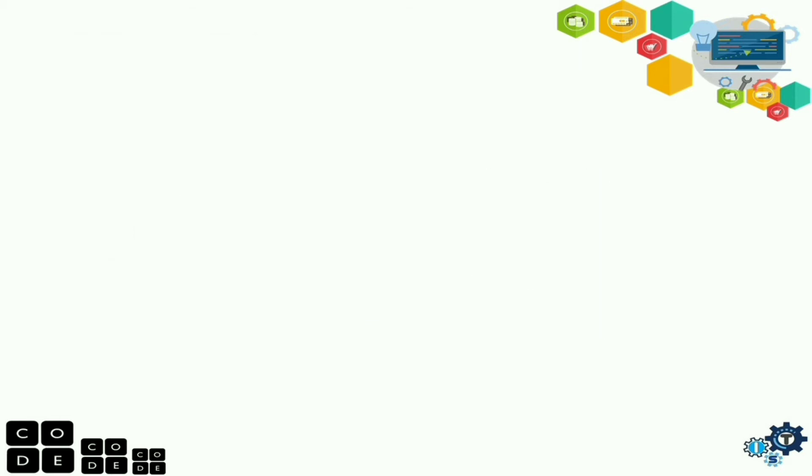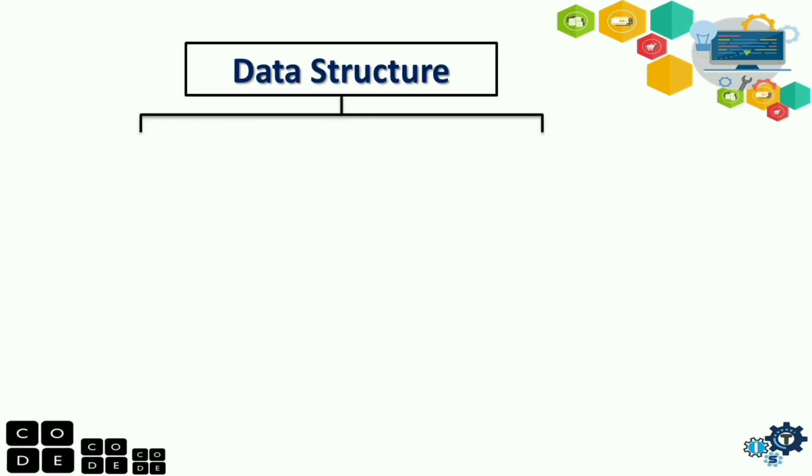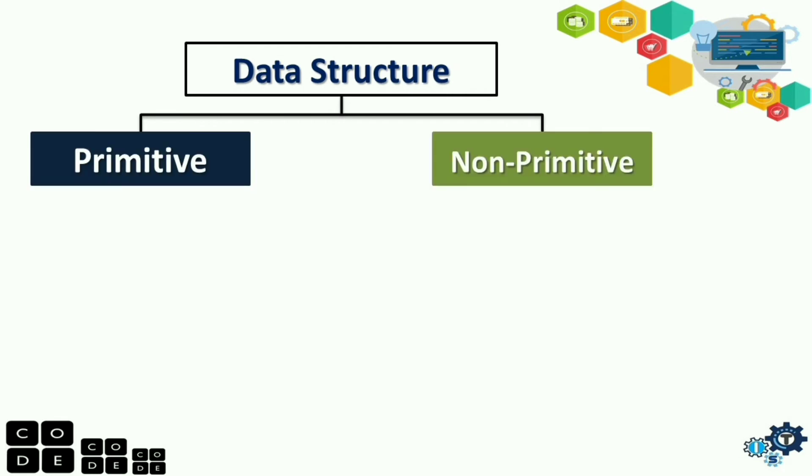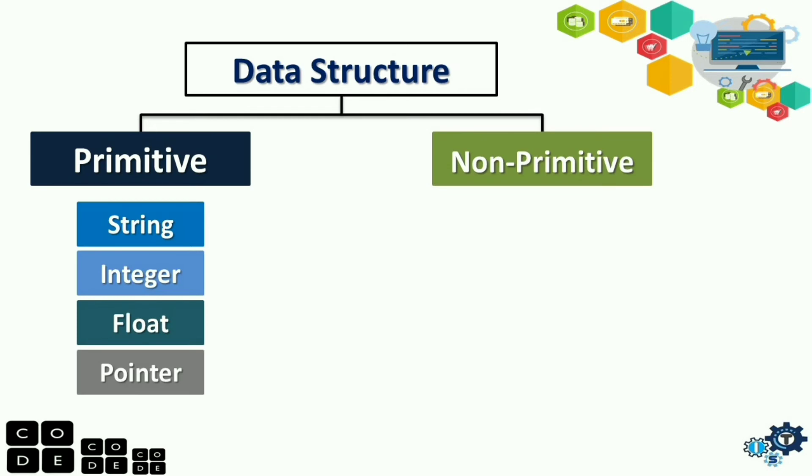So, to better understand data structure, we have this. So, from the data structure, meron siyang dalawang type. Meron siyang primitive and non-primitive data structure. So, under primitive data structure, these are the string, integer, float, and pwede ding pointer. So, these are the primitive data structures.